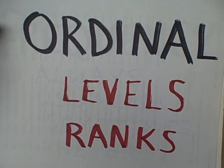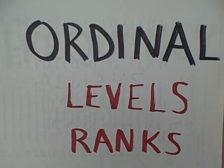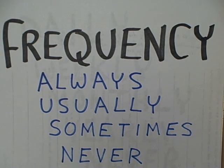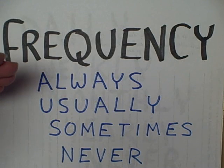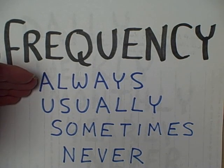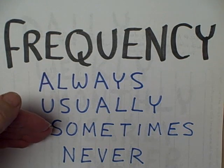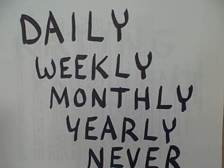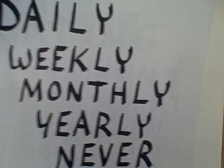Then we come to a more precise scaling known as ordinal scaling. This is where we have different levels or ranks within a variable. For example, if we want to measure the frequency that an individual person does something: does it occur always, usually, sometimes, or never? Notice that always is more frequent than usually, usually is more frequent than sometimes, and sometimes is more frequent than never. Or we could say daily, weekly, monthly, yearly, never — once again, daily is more frequent than weekly, and so forth.